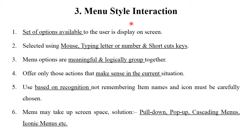The third interaction style is menu-based interaction. Menu means a set of options available to the user which are displayed on screen. It is selected using a mouse, typing a letter, numbers, or shortcut keys. Menu options are meaningful and logically grouped together. It offers only those actions that make sense in the current situation. It uses recognition, not remembering items — menus are already given in the menu bar. Menus also have different types: pull-down menu, pop-up menu, cascading menus — for example, a file option that contains a new option, which again contains sub-options — and iconic menus where icon images are given.